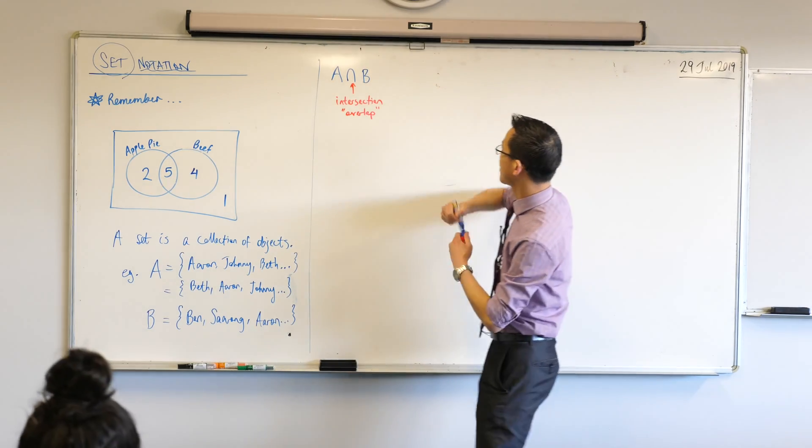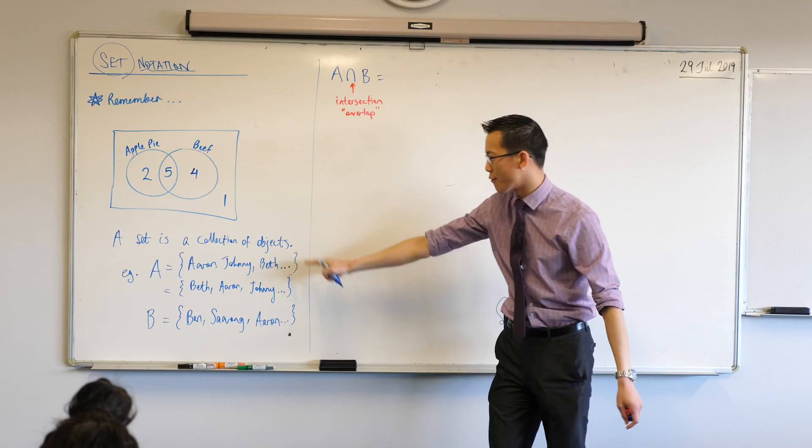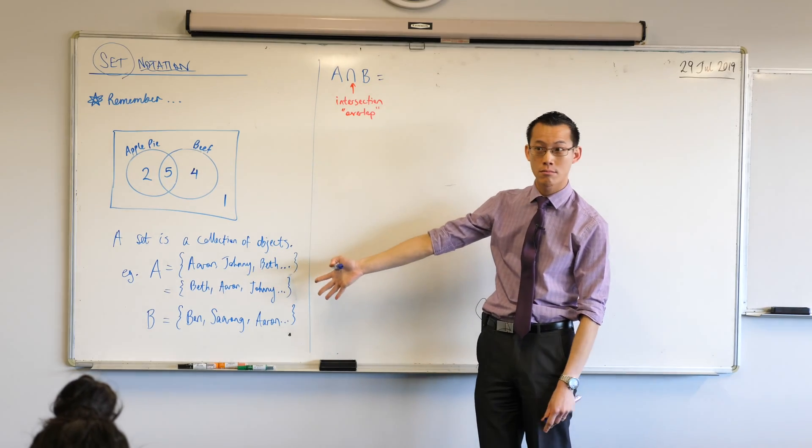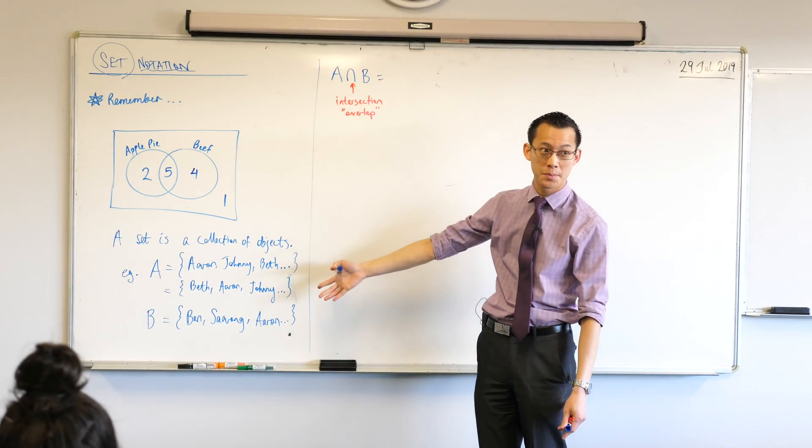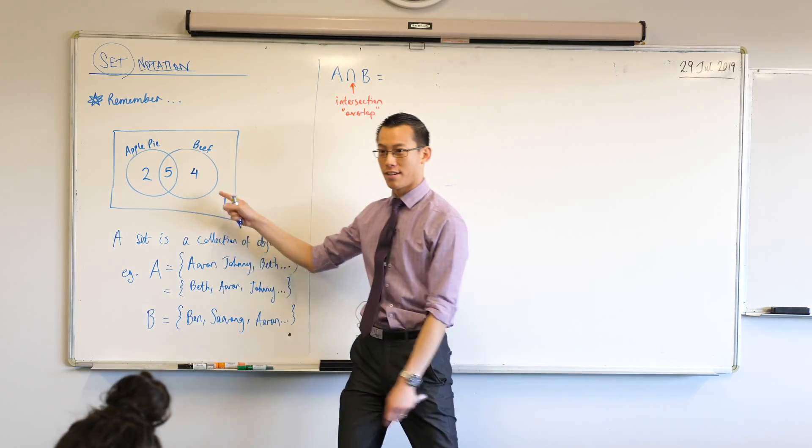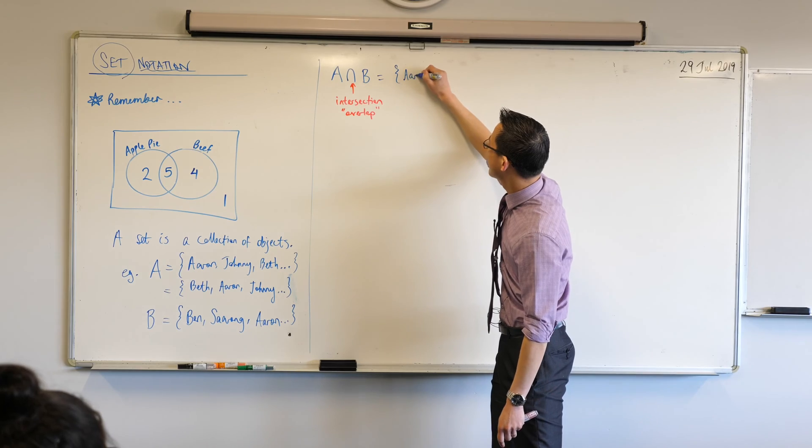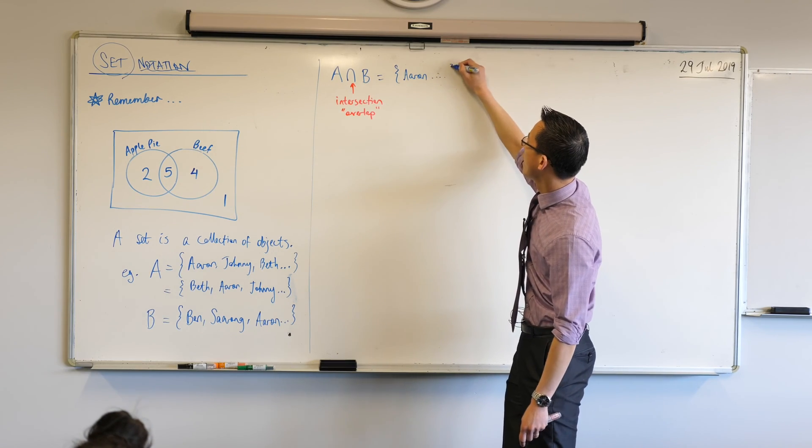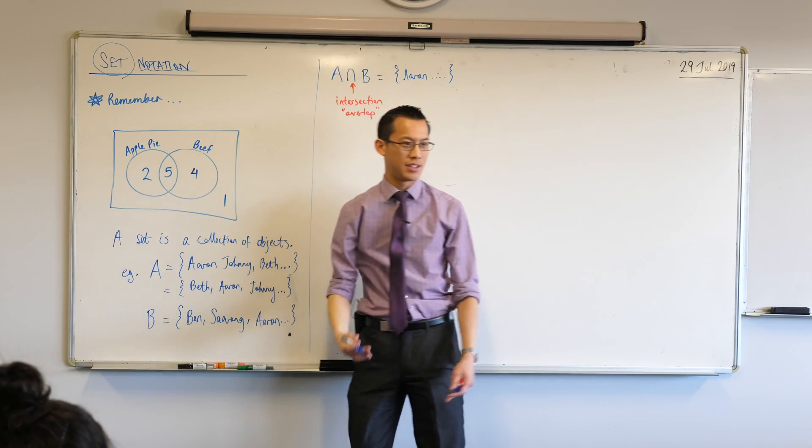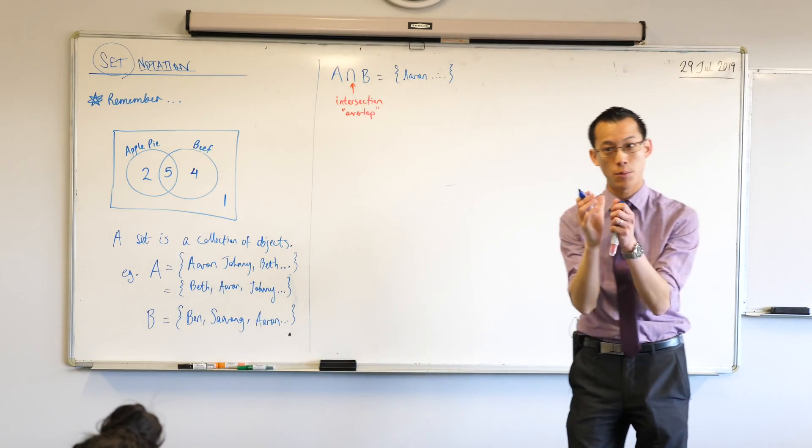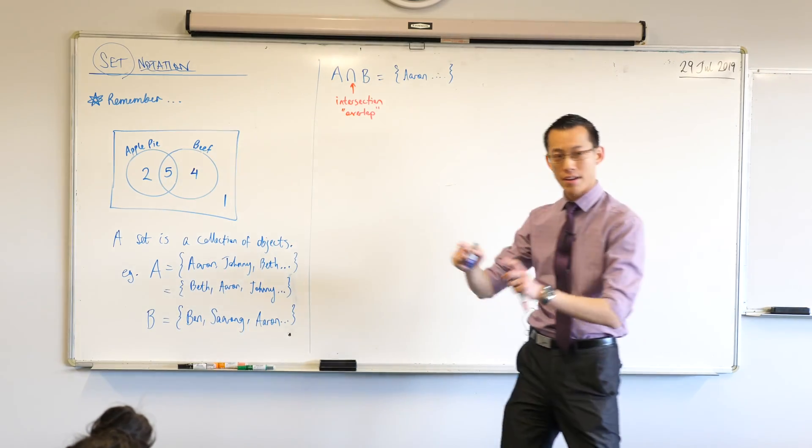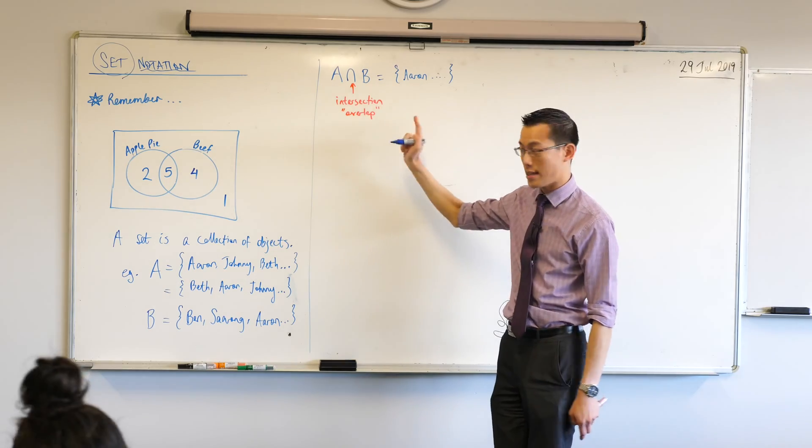And what it would mean is the people who are in set A and in set B at the same time. So, another way, like colloquially, I just think of that as the overlap. So, in this case, I would have, well, the only one I've written down that's in both at the moment is, just have a look at my names, it's just Aaron in this case. So, I'm going to write down Aaron here, and I've got a few others, as you can see. I'm just too busy to write all of these. But you get the idea that these are people who belong in both sets.